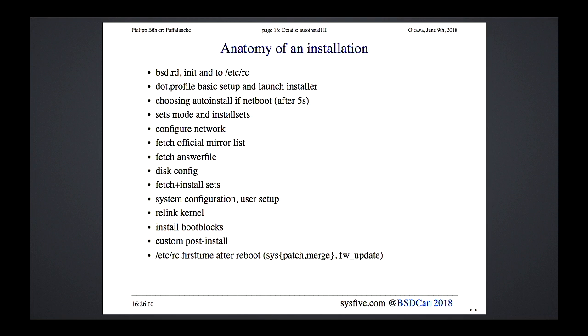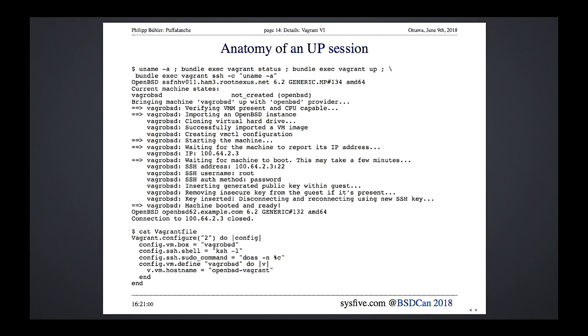After the install is finished, halt rather than reboot so /etc/rc.firsttime won't run. There's a build.md file in the GitHub repo outlining what to do. Then you box it up and tell Vagrant to store it in its global hidden directory. When you use that box, Vagrant fetches it and clones the disk image into .vagrant/machines, along with the metadata and vm.conf, then fires it up.